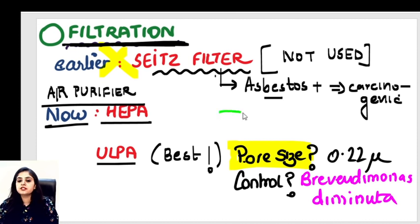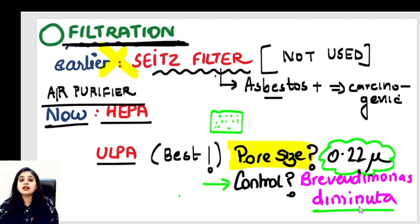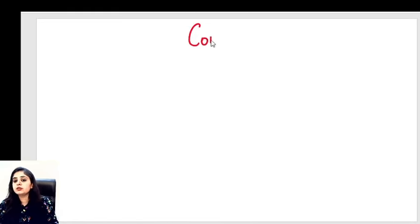The control for filtration sterilization is Brevundimonas diminuta — because with such a small pore size of 0.22 microns, you need a very small bacterium as the test organism. So for filtration, the control is Brevundimonas diminuta.